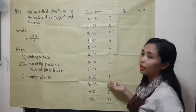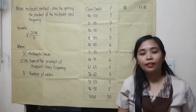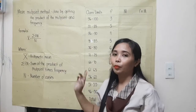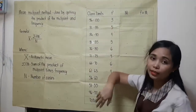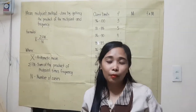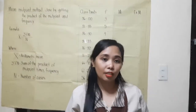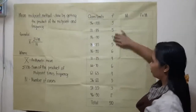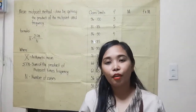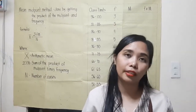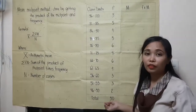Let's look at this table and compute the arithmetic mean using the midpoint method. In this table, we have the class limits. Class limits are the minimum and maximum value a class interval may contain. Frequency is the number of times the event occurred in an experiment or study. In this frequency column, we have a total of 50 cases.